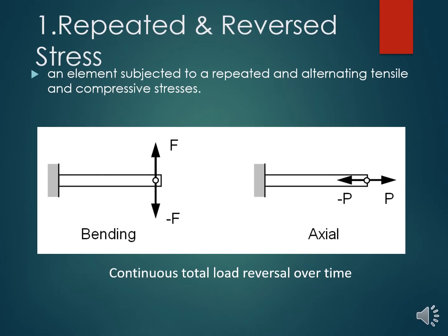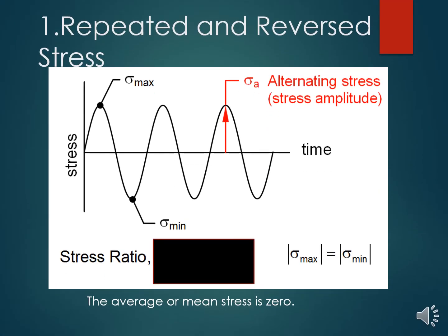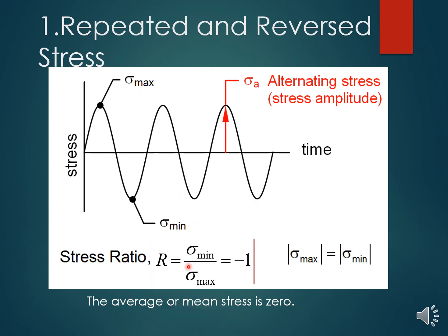For repeated and reversed stress, an element is subjected to alternating tensile and compressive stress. You can see this in both the bending case and the axial direction, where repetitive stresses are acting. Looking at the stress versus time graph, the stresses cycle between mean and max values, and in this case the average or mean stress equals zero.